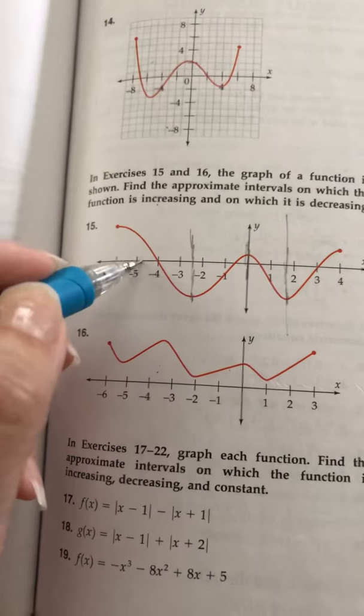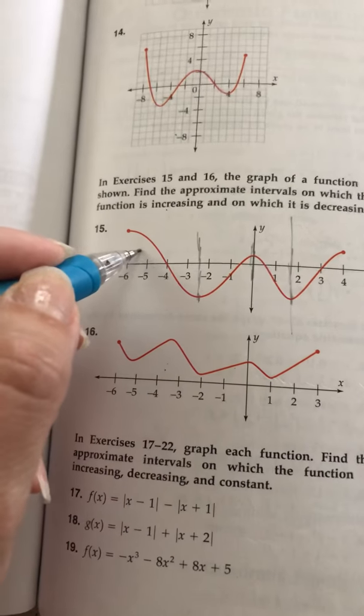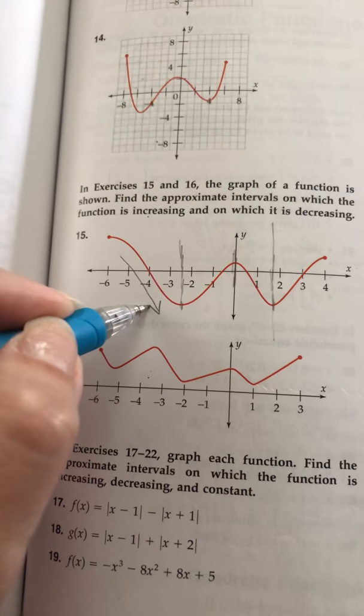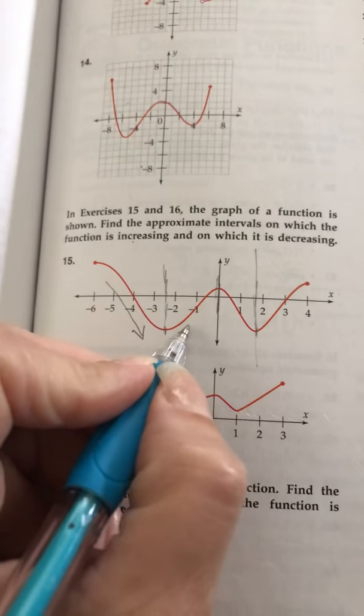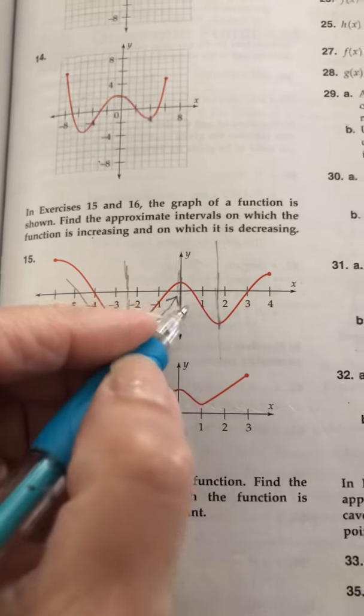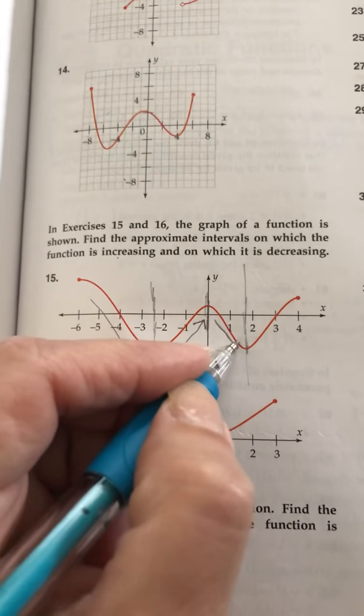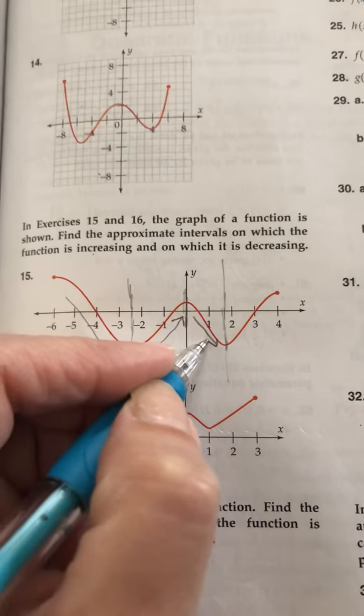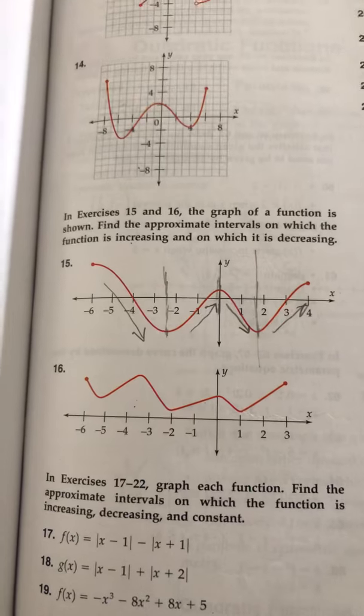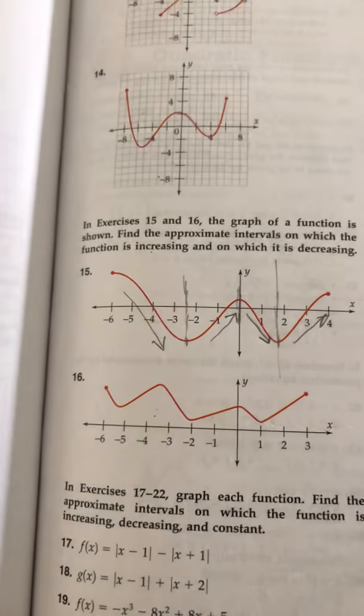So I would say it is decreasing from negative infinity to maybe negative 2.5, then from negative 2.5 to 0 it's increasing, then from 0 to maybe 1 and 3 quarters it's decreasing and 1 and 3 quarters to infinity it would be increasing. Alright that's number 15.